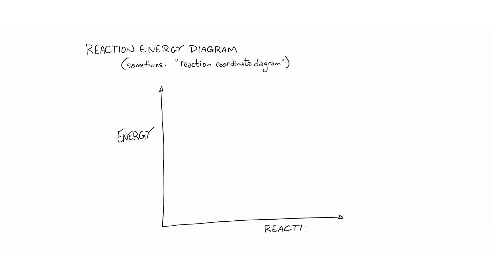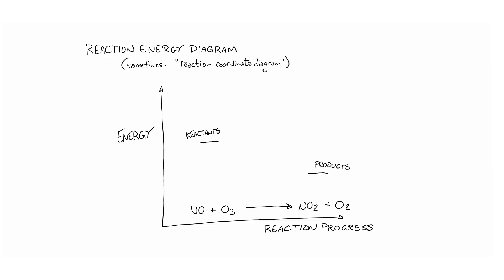The reaction energy diagram is basically a graph. Energy of the system is on one axis and the progress of a chemical reaction is on the other. It shows you how the total energy of a given group of molecules changes as those molecules transform from reactants to products. At the start of the reaction we have the reactants, and at the end we have the products — nitric oxide and ozone turning into nitrogen dioxide and dioxygen. But to get from start to finish, we have to go through a structure at the instant of collision where one oxygen-oxygen bond is breaking and the new nitrogen-oxygen bond is forming.